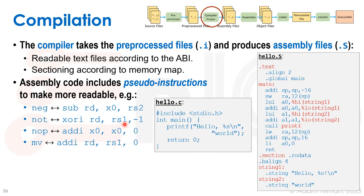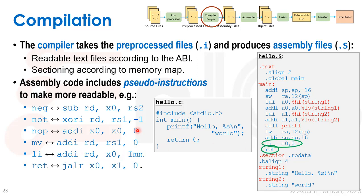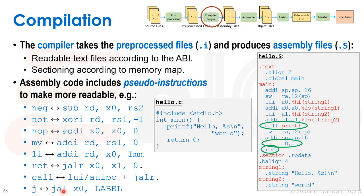ret is a return command — it's jalr x0, ra, 0, but we just write ret. call loads an absolute address and uses jalr — we just write call printf. jump (j) is similarly simplified, and the compiler converts it to a real instruction. Many of these pseudo-instructions appear in the assembly code produced after the first stage of compilation.